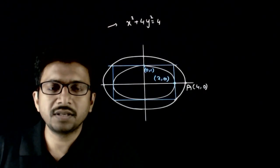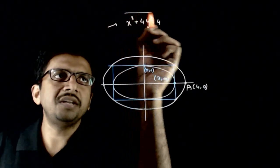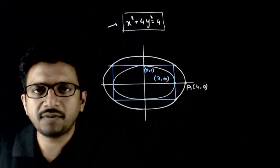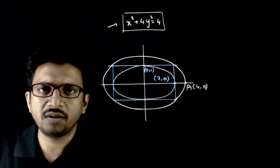Welcome students. In this question, you are given that initially you have an ellipse x² + 4y² = 4.